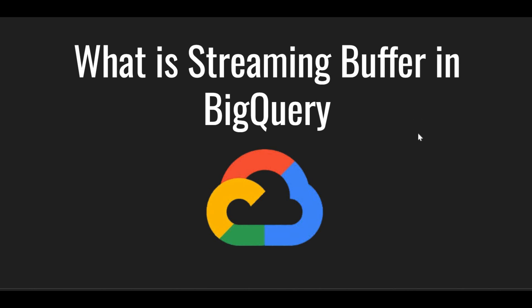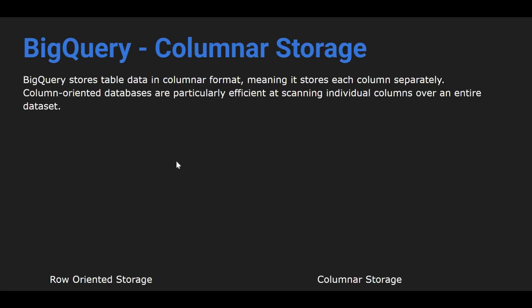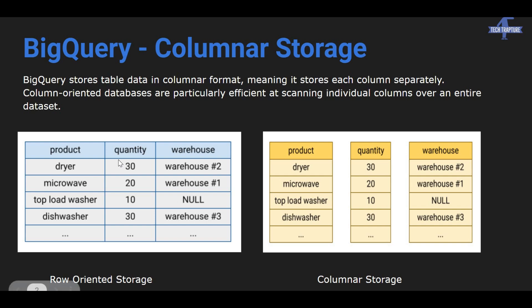Before understanding the streaming buffer, let's first understand two small concepts. First, BigQuery is a columnar storage. Whenever we store data in a traditional database, each record is stored row by row — the first row goes into a particular block of memory, the second into another. But BigQuery stores data column by column, so each column is stored in a different block of memory. That is why we don't use SELECT * in BigQuery; for better performance you use SELECT with specific column names.